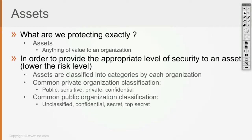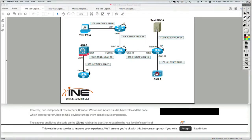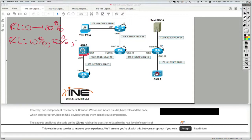In order to provide the appropriate level of security to an asset that the organization owns, by providing a specific security level to an asset, we're actually lowering the risk level. If the risk level can be zero to 100%, then by implementing specific security technologies to guard or defend or protect specific assets, the risk level might remain at 10%, 20%, or 30%, for example.